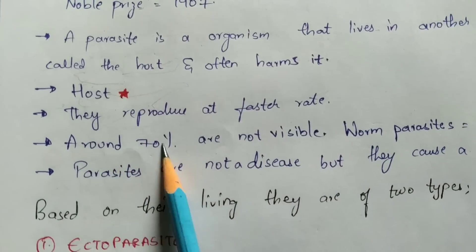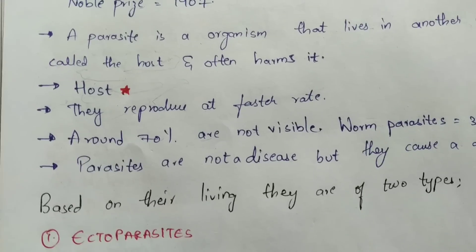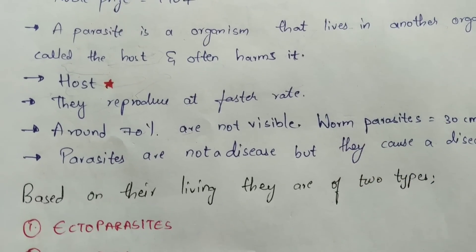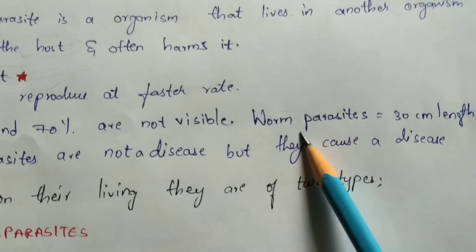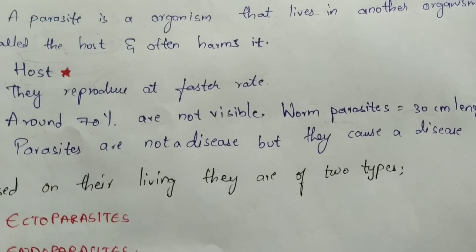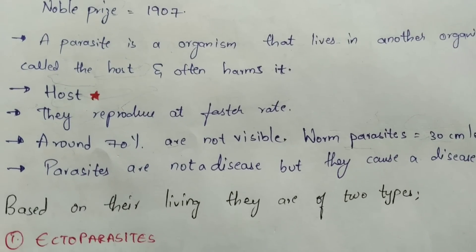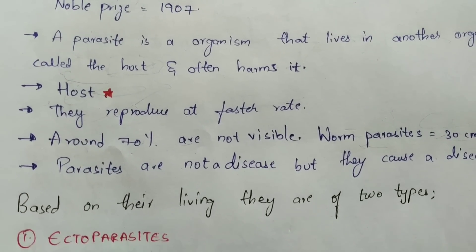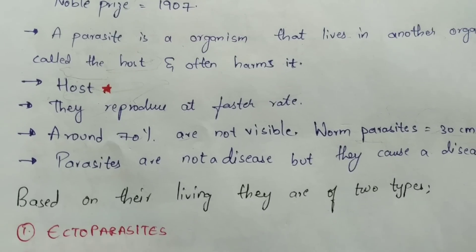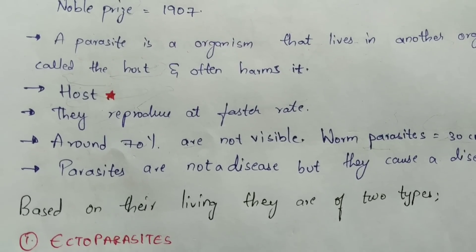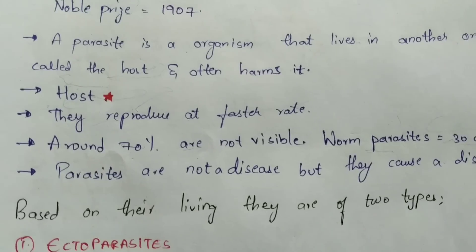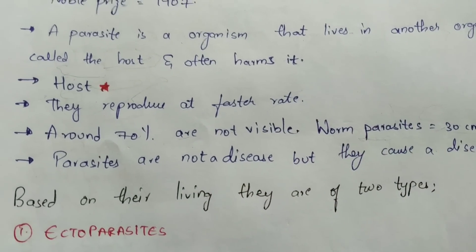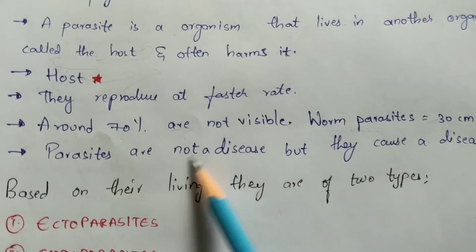Around 70% of parasites are not visible to the naked eye. However, in the case of worm parasites, many are visible and some can be approximately 30 centimeters in length. For example, a live case was observed where a person affected with a parasitic disease had worms coming out from his mouth — that is how long worm parasites can grow.